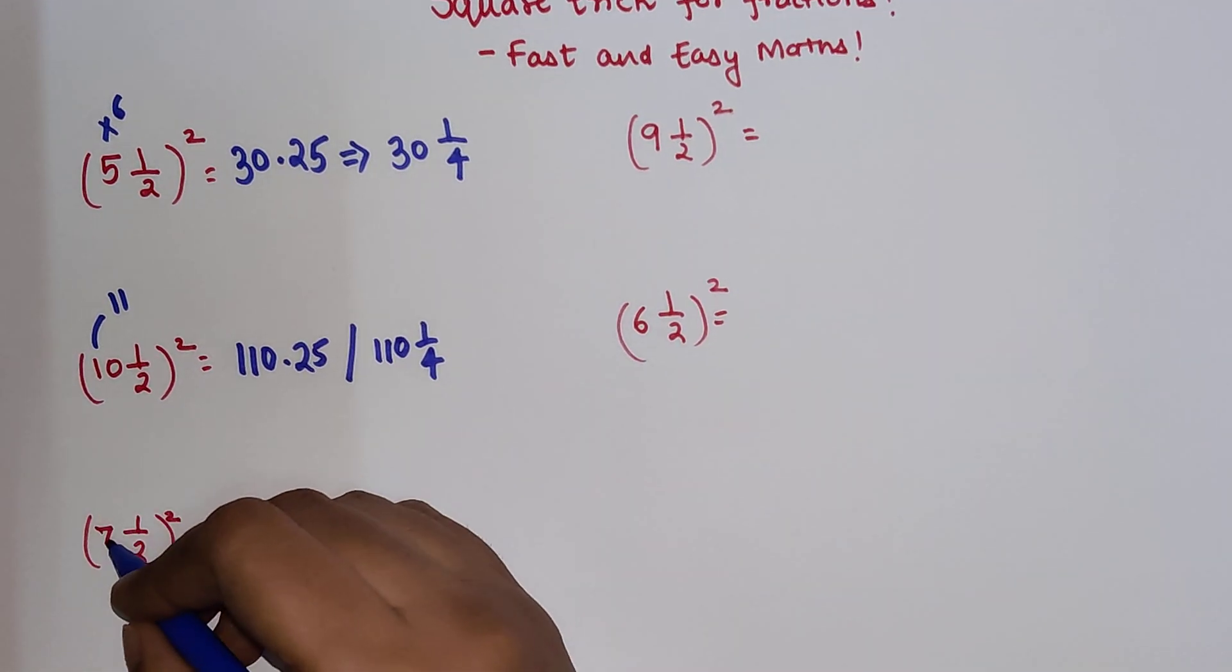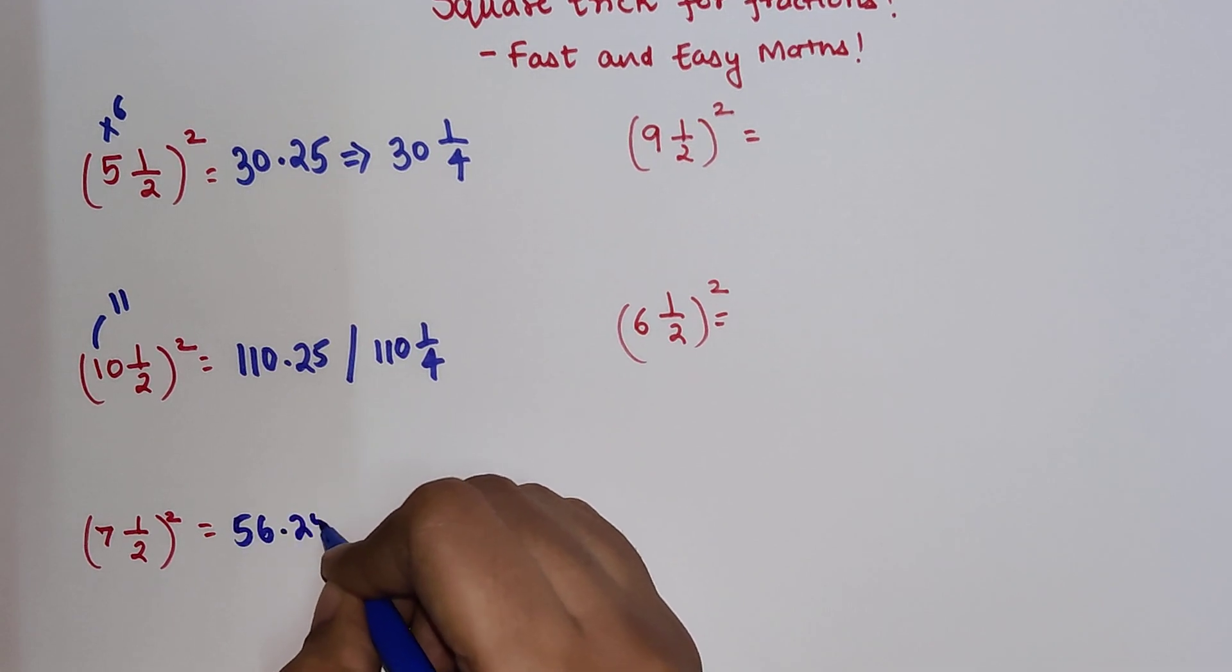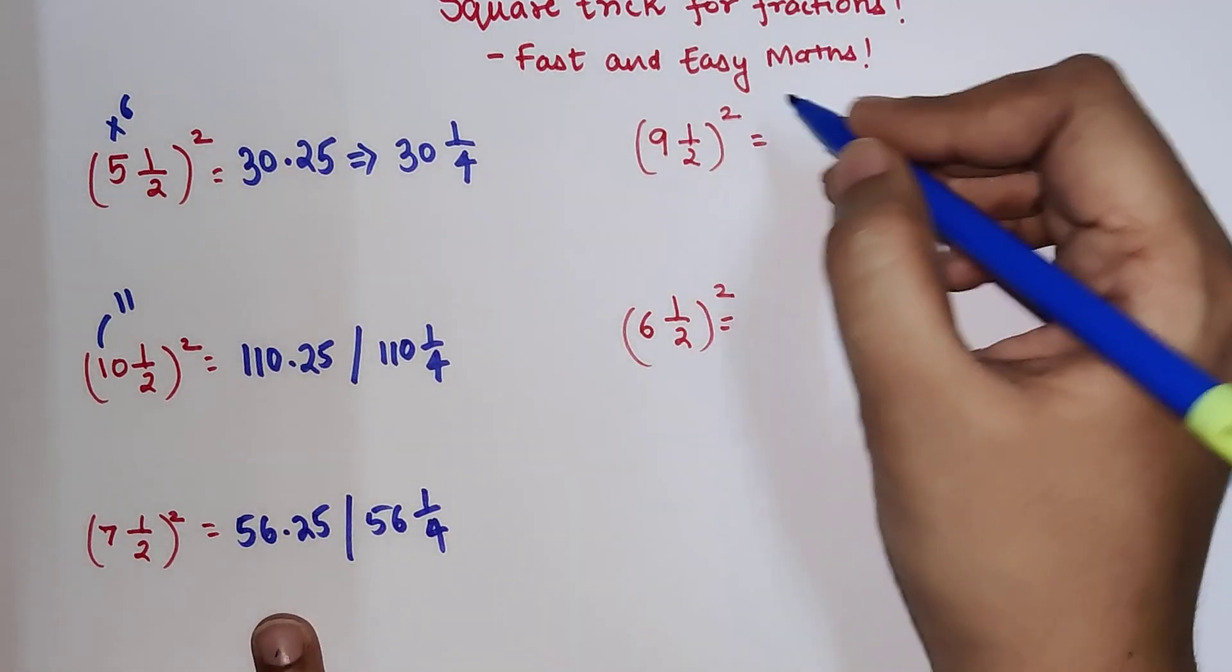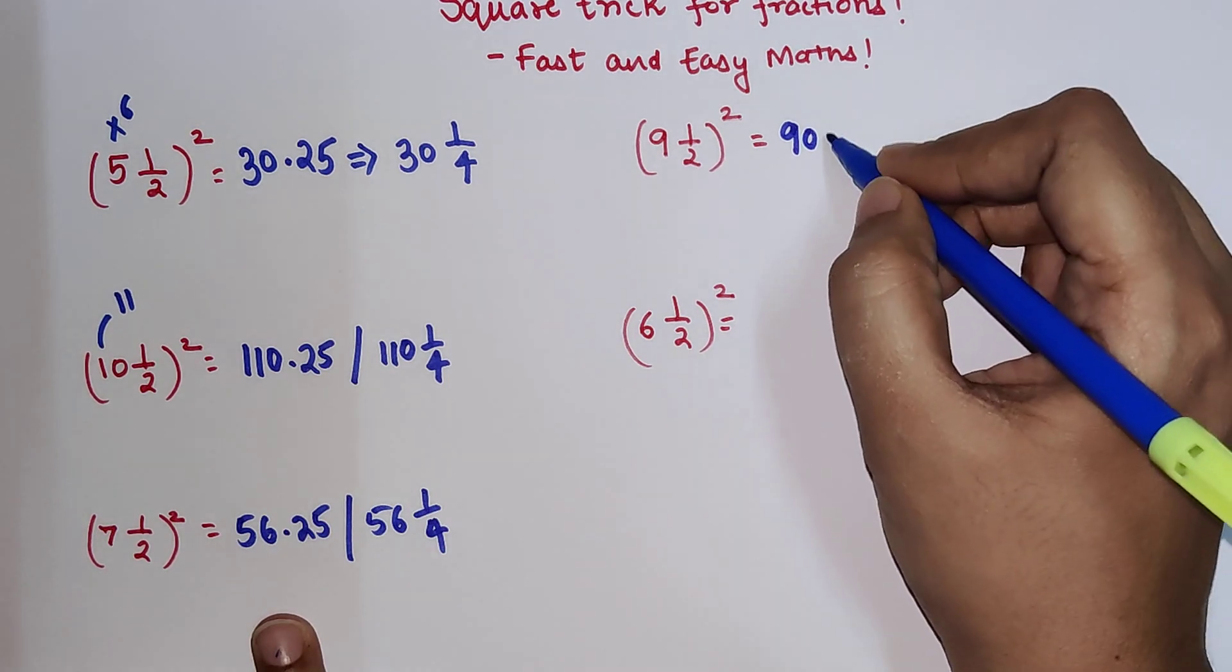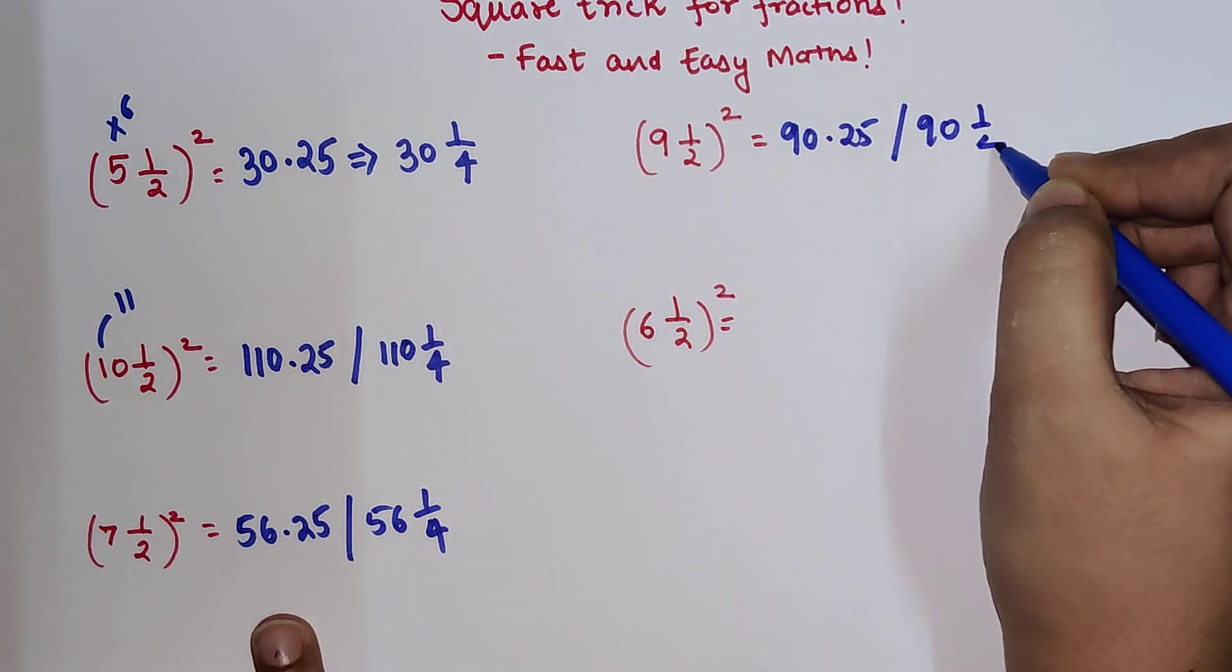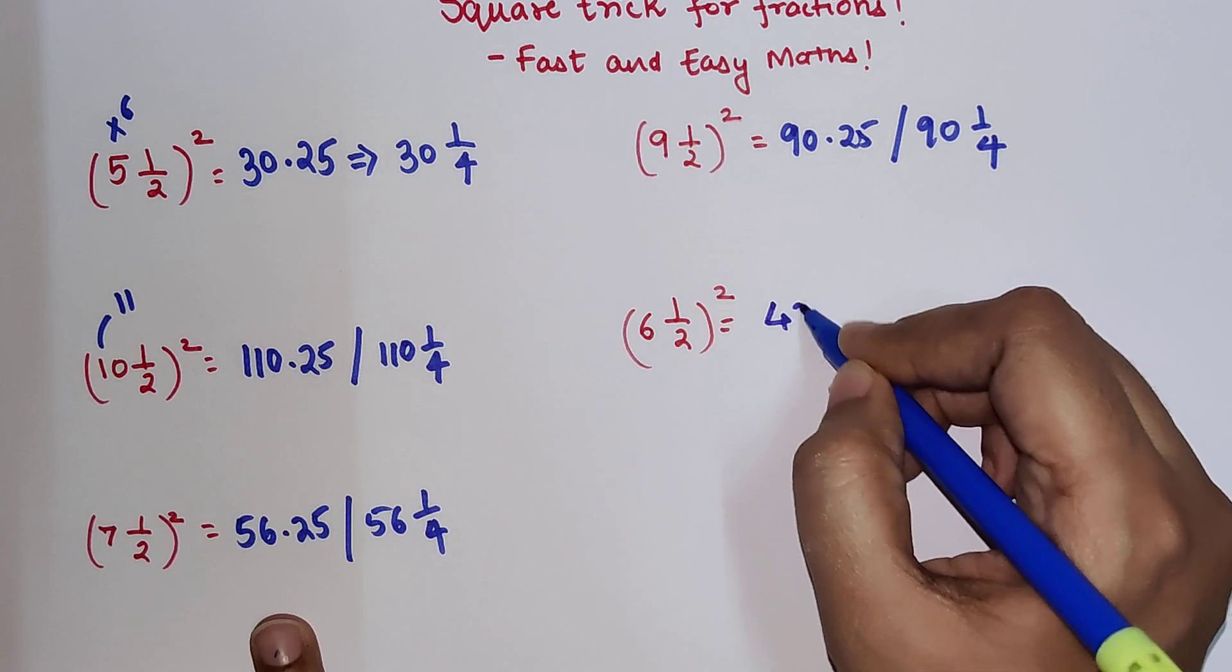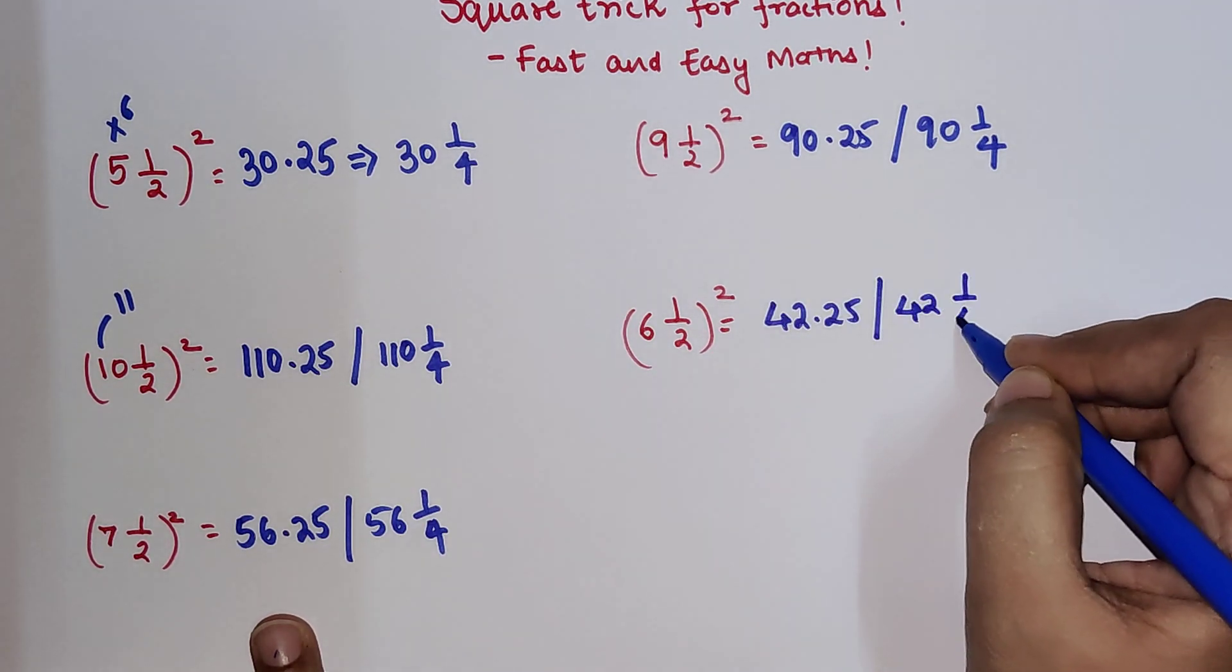So very quickly, this will be 7 into 8, that will be 56.25. So the answer is 56 1 by 4. Similarly for this one, it will be 9 into 10, so that will be 90.25, or you can say 90 1 by 4. So this one will be 6 into 7, that is 42.25, or it would be 42 1 by 4.